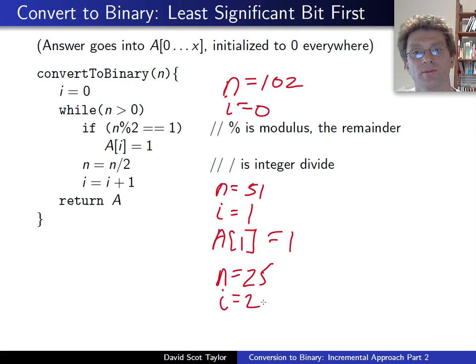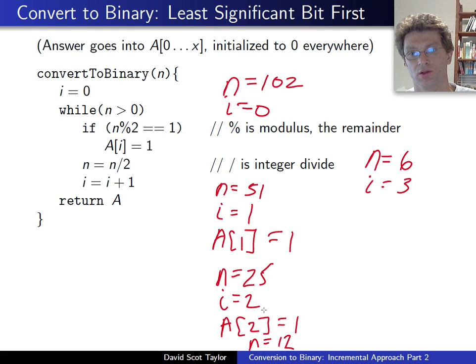n equals 51 divided by 2 is going to be 25, and i equals 2. We come up again. Again, we have n is odd, so we're going to say a of i equals 1. n is going to be set to be 12, the number divided by 2, integer divide. i is still greater than 0. But n is not odd. So then we're going to say n equals 6, i equals 3. This is going to be i equals 4 here, i equals 3 down here.